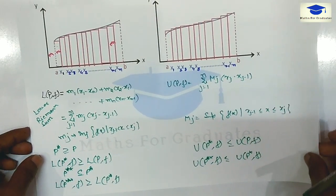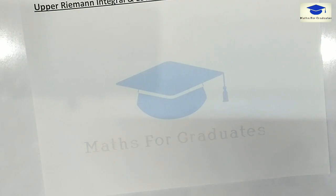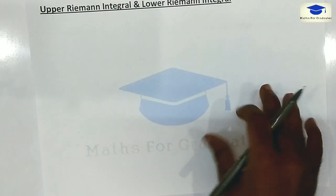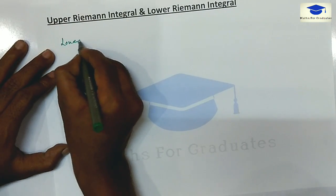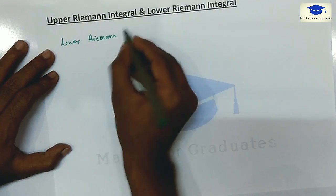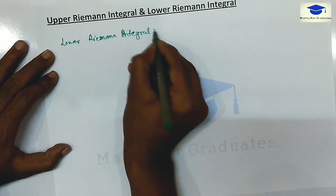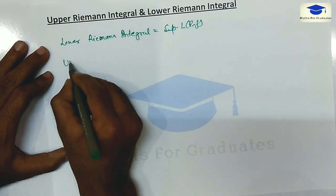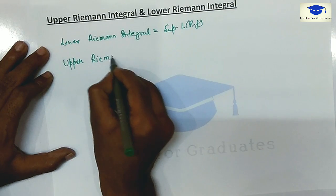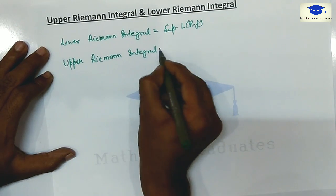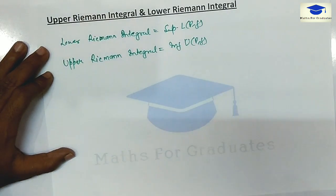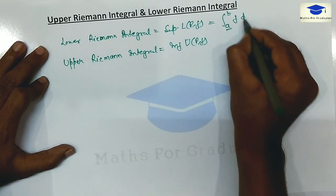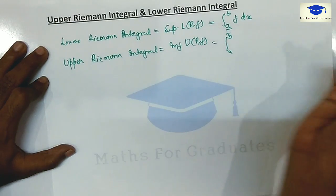Now, two more terms are introduced: the upper Riemann integral and the lower Riemann integral. As we have seen, for every refinement we get a better approximate area. The lower Riemann integral is the supremum of L(P, f), and the upper Riemann integral is the infimum of the upper Riemann sum. These can be represented as the lower integral ∫f dx and the upper integral ∫f dx respectively.